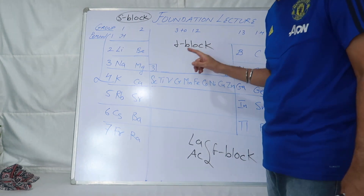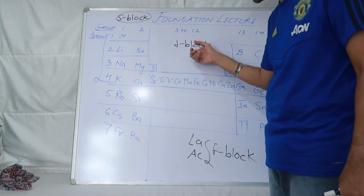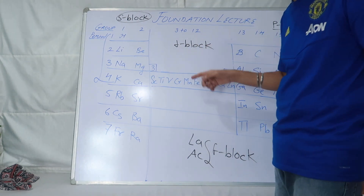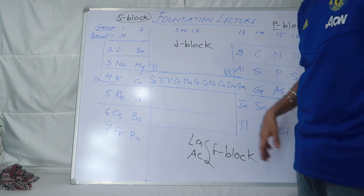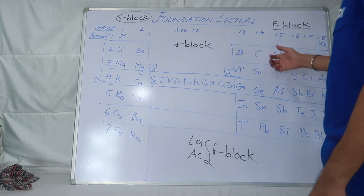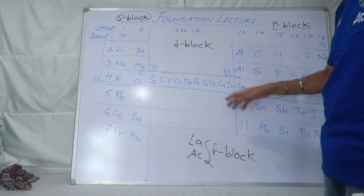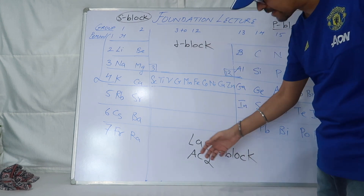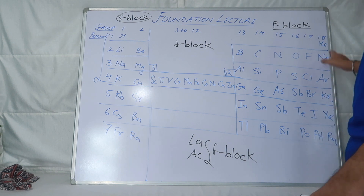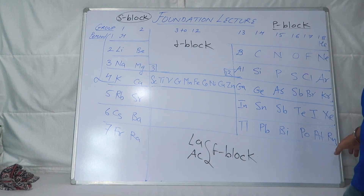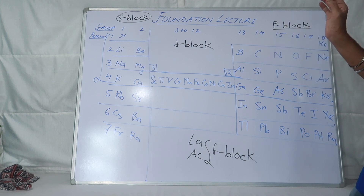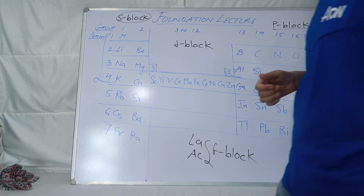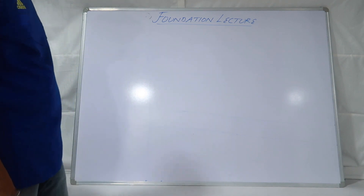D block elements are called transition metals, and the lanthanoid and actinoid series are called inner transition metals. These are your normal elements, these are your transition metals, inner transition metals. And of course zero group is present on the extreme right-hand side of the modern periodic table. So pahla part — I hope sabko clear ho gaya. Please copy it down.